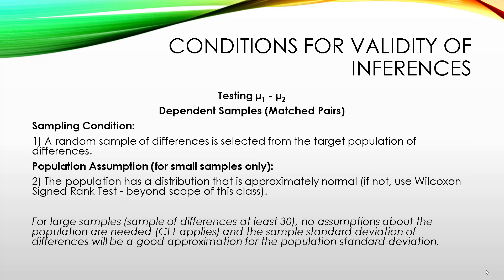So just a few conditions or assumptions that we need to make in order for these inferences to be valid. For our samples, we need to have the samples be random samples of differences selected from the target population of differences. Truth be told, it doesn't have to be a purely random sample, but it has to be unbiased, and it has to be representative of the population.